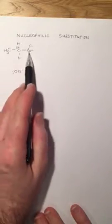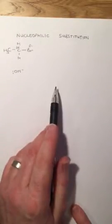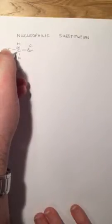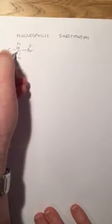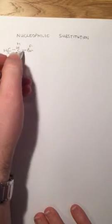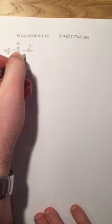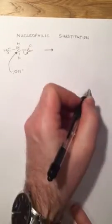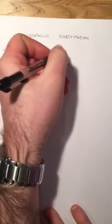So we've got this polar carbon-bromine bond. The lone pair of electrons attacks the electron deficient carbon and we signify that using a curly arrow, which shows the movement of the pair of electrons. As this pair of electrons approaches the carbon, the carbon releases the pair of electrons in the carbon-bromine bond, so that the carbon only has four bonds or eight electrons at any one time.